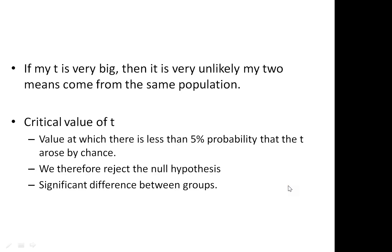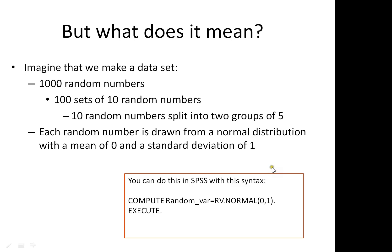So, if my t is very big, then it's very unlikely my two means come from the same sample population. But what does it really mean in practice? I think this is the thing that makes it confusing. We're not talking about distributions of the actual data anymore, we're talking about the distribution of the test statistic that comes out the other end of the equation that I've shown you. So let's imagine that we make a data set, and in fact I have. I've used SPSS to generate a thousand random numbers. Each of those random numbers is drawn from a population with a mean of zero and a standard deviation of one. But then I've subdivided them further into a hundred sets of ten random numbers, and within those sets of ten random numbers I've split them further into two groups of five. What I'm going to end up doing is a hundred t-tests on each of our groups of five pieces of random data. If you want to, you can actually generate random variables in SPSS exactly this way by using the syntax below.